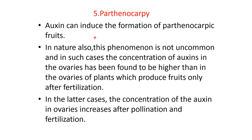Parthenocarpy. Auxin can induce the formation of parthenocarpic fruit. In nature, this phenomenon is not uncommon, and in such cases, the concentration of auxin in the ovary has been found to be higher than in the ovaries of plants which produce fruits only after fertilization. In the latter case, the concentration of auxin in ovaries increases after pollination and fertilization.